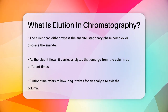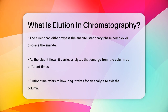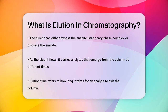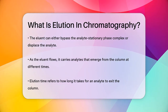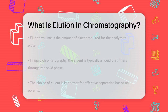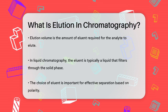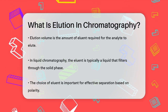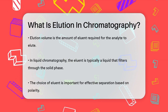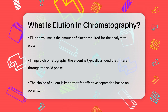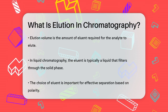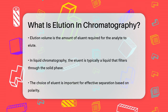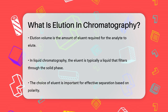For example, in liquid chromatography, the eluent might be a liquid that slowly filters through the solid stationary phase, bringing the separated components with it. The choice of eluent is crucial because it needs to have the right polarity relative to the sample and the stationary phase to ensure proper separation.